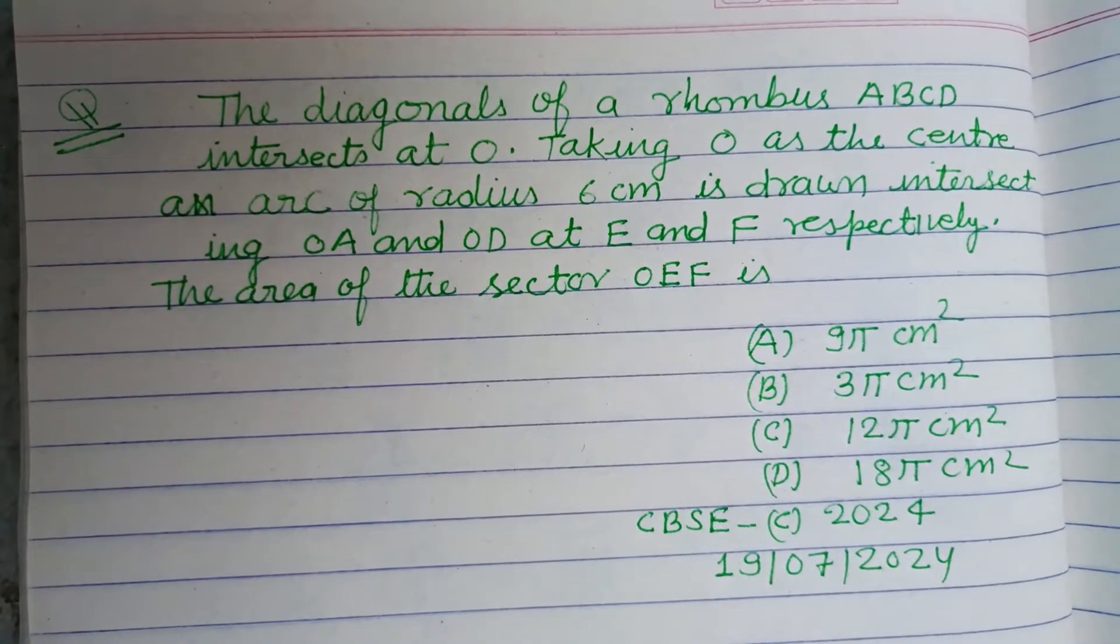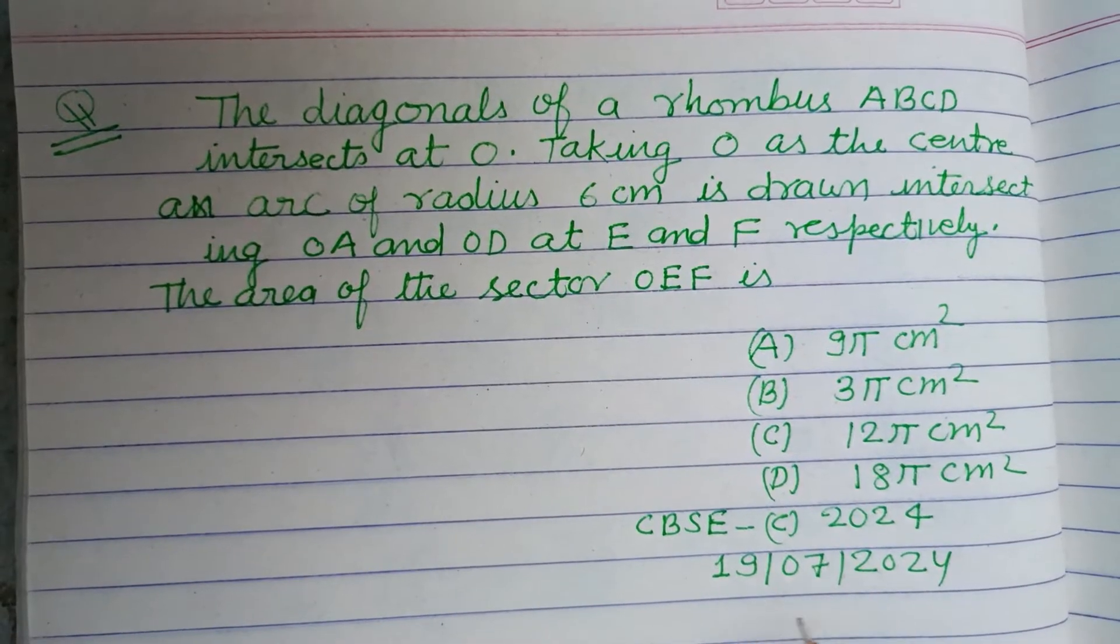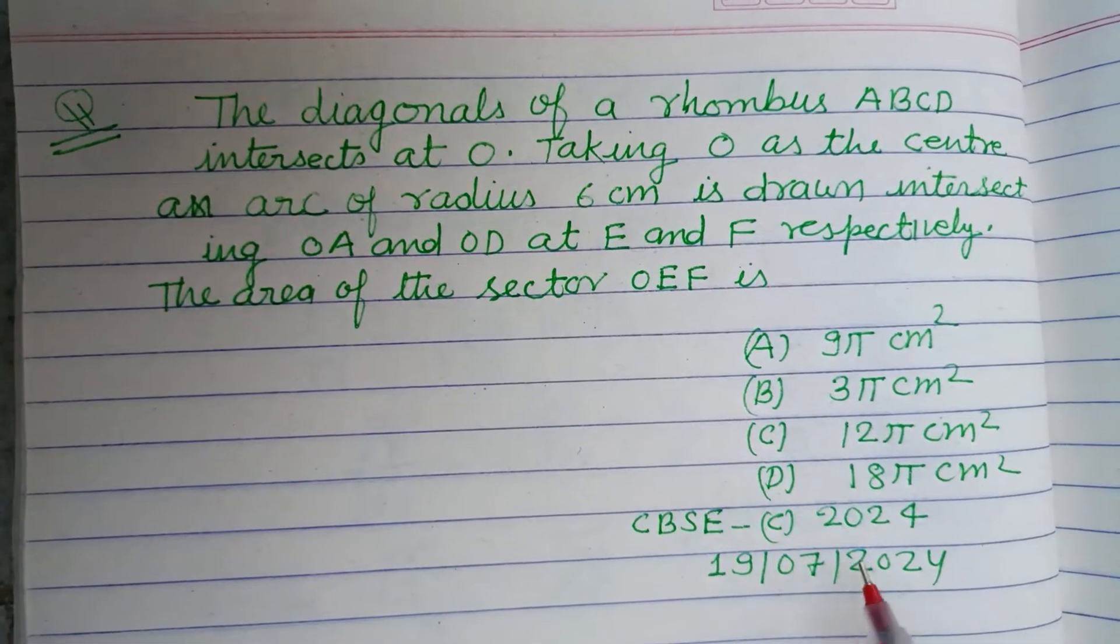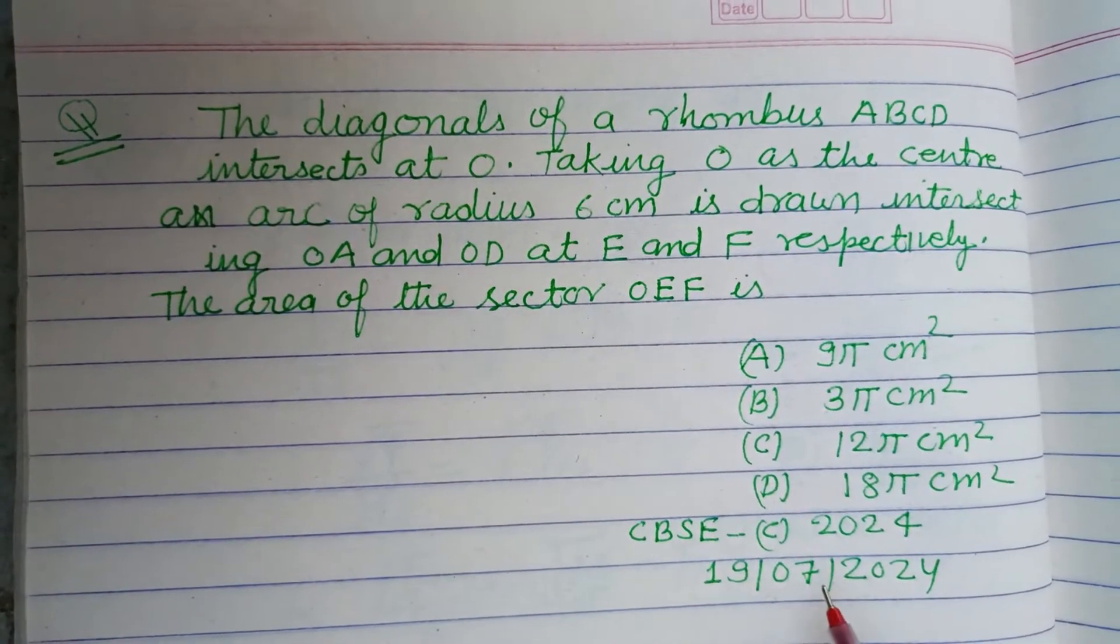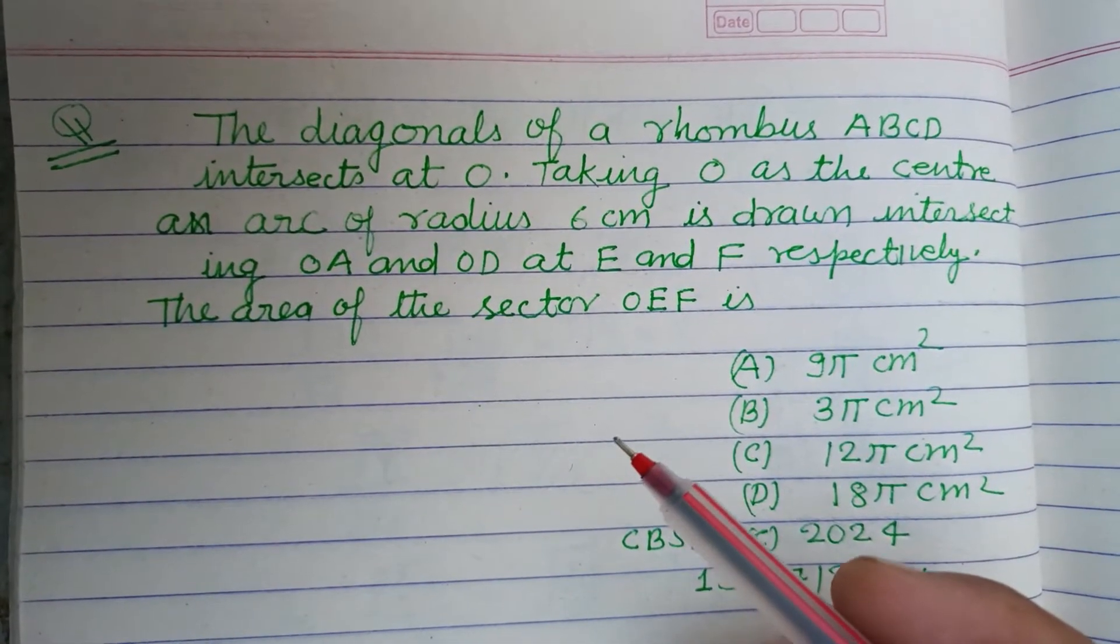Hello viewers, warm welcome to this YouTube channel. This is a question from CBSE Class 10 Board Exam Compartment 2024 held on July 19, 2024. The diagonals of a rhombus ABCD intersect at O.